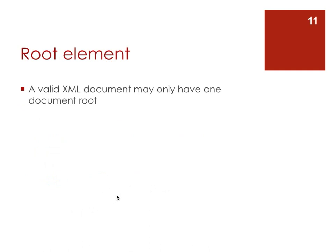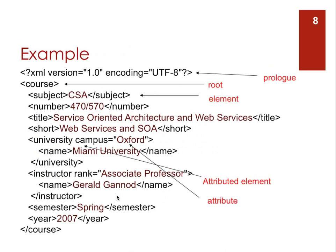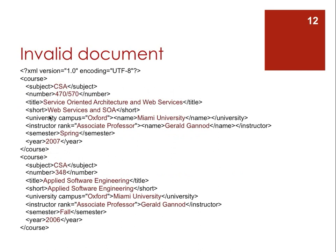An XML document can only have one document root. Looking at the valid document shown here, there is only one root. An invalid document would be one that has the same content but with an additional 'course' grouping, resulting in two roots — which makes it invalid. What you would want instead is a schema structure that encloses several courses within one root tag.